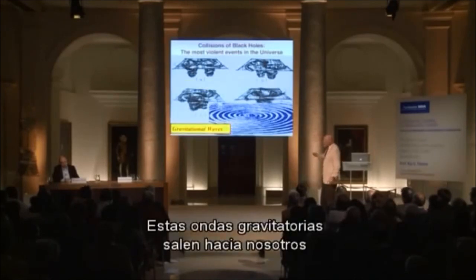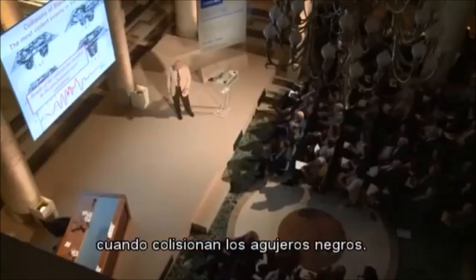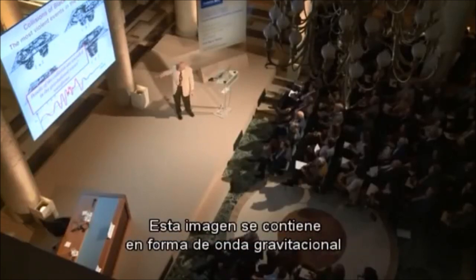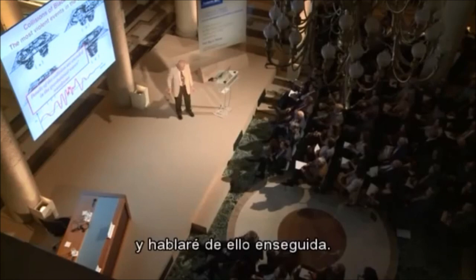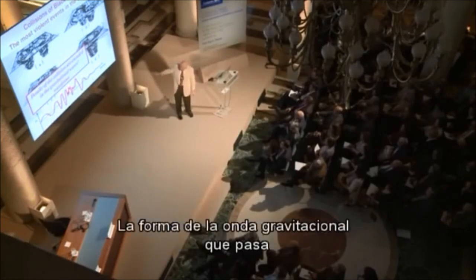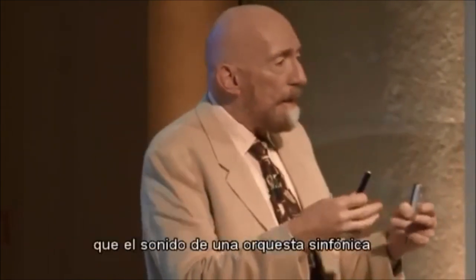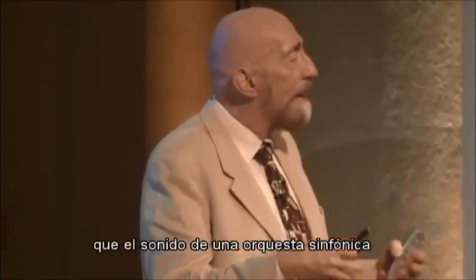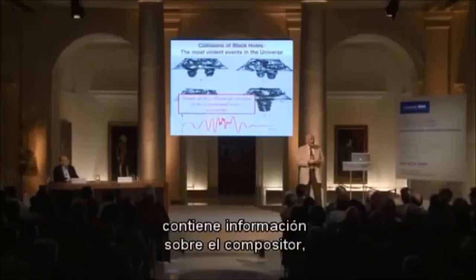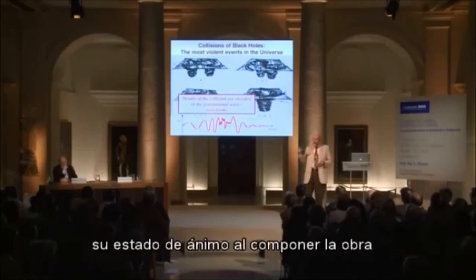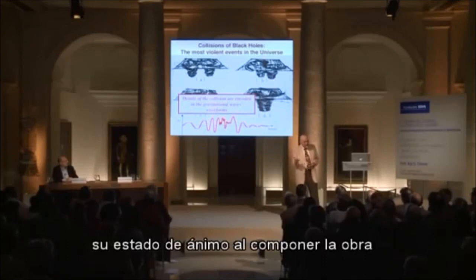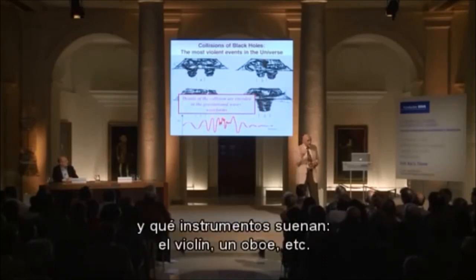These gravitational waves come out to us and they should bring us a detailed picture of what happens when the black holes collide. The picture is contained in the gravitational waveform — the shape of the gravitational wave that comes past. It carries information about the collision in the same way that the sound from a symphony orchestra contains information about the composer, the mood of the composer, and what instruments are being played — a violin, an oboe, and so forth.